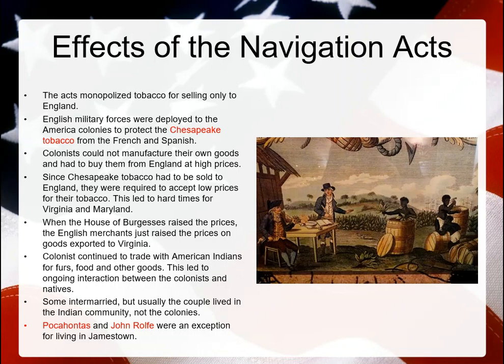With all this going on, there was also intermarrying happening between Native Americans and colonists. Colonists continued to trade with Native Americans on things like food and furs. Most Native Americans who intermarried with colonists didn't live in the colonies — it wasn't very socially accepted, so they'd live in the Indian community. One exception was Pocahontas and John Rolfe, who both lived in Jamestown and made a lot of money growing tobacco, making Jamestown a very prosperous city.